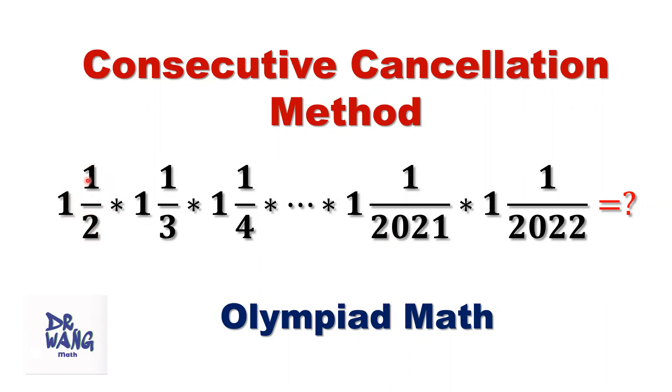First one is one-and-one-half. Second one, that's one-and-one-third. Here, that's one-and-one-fourth. The last one is one-and-one over 2022. How to simplify?